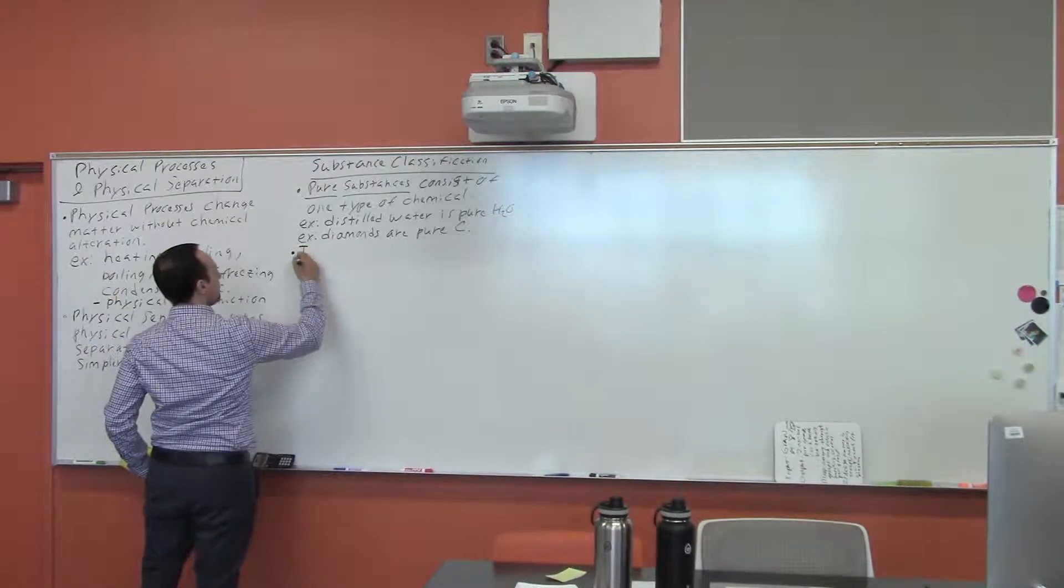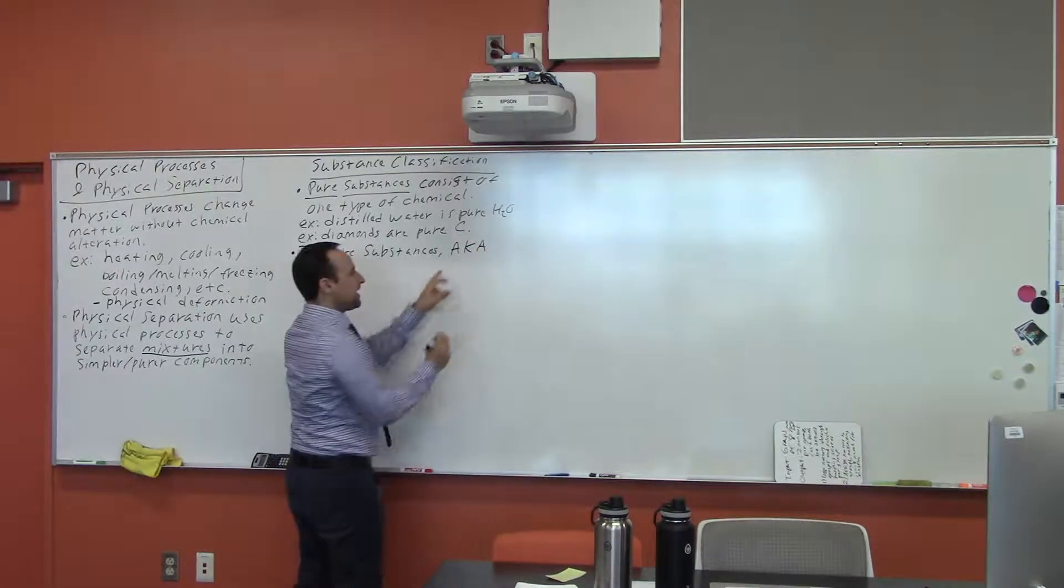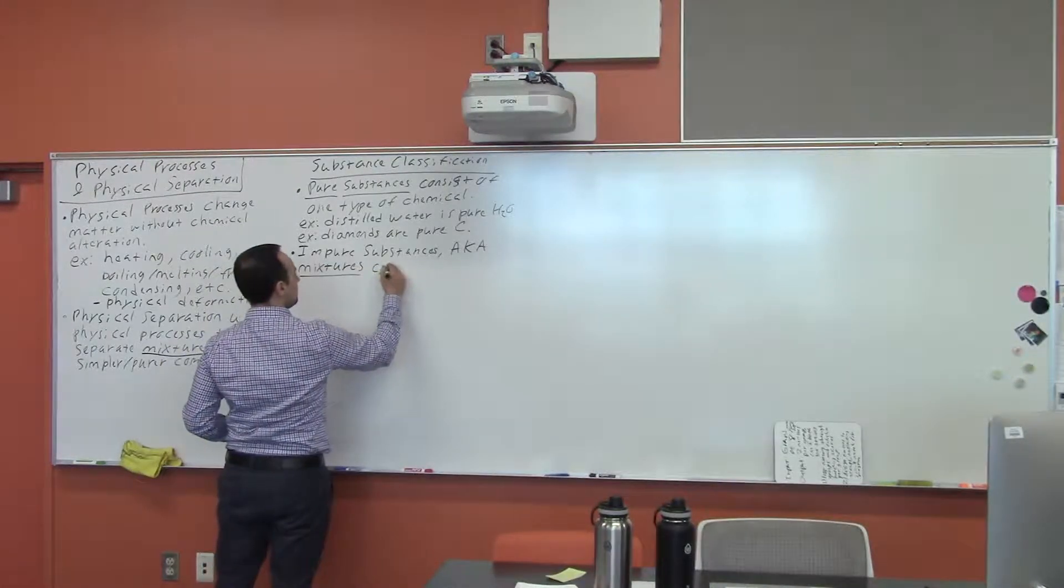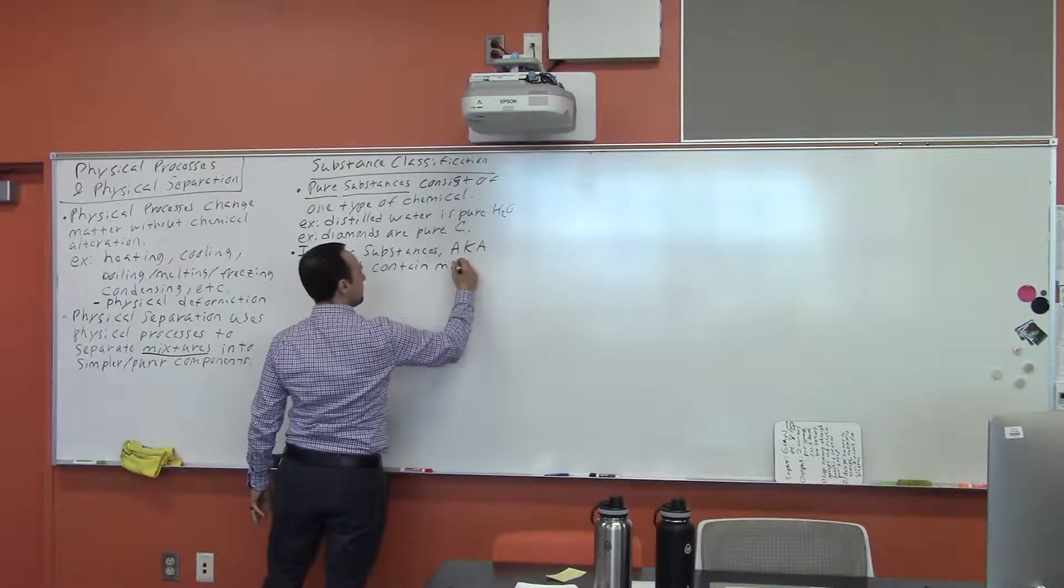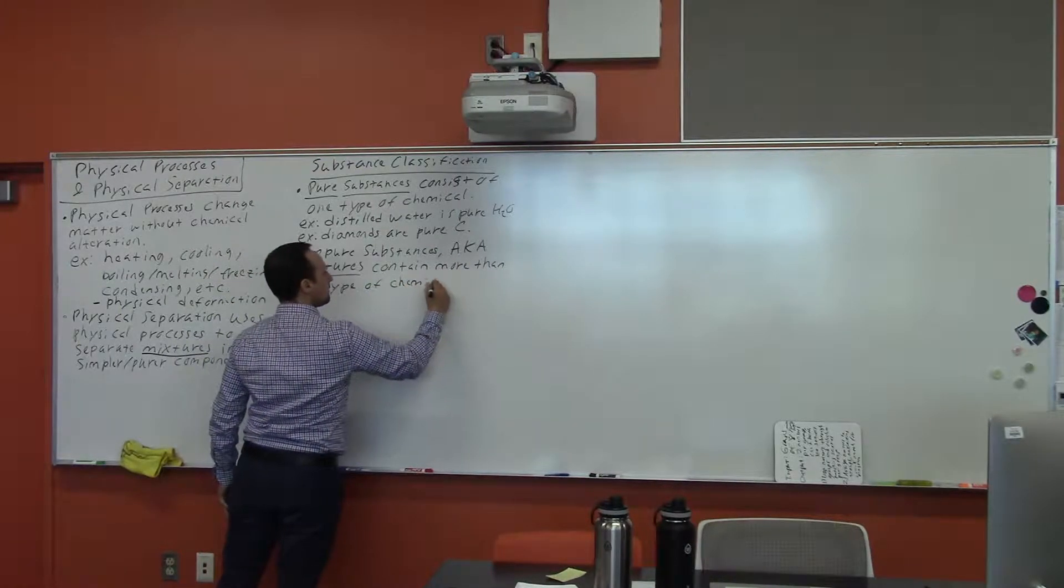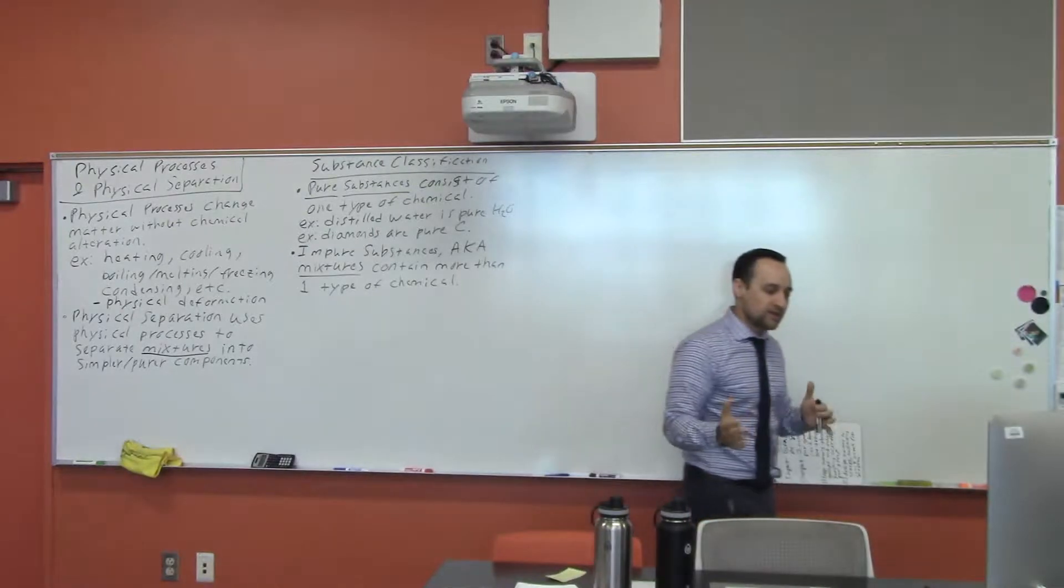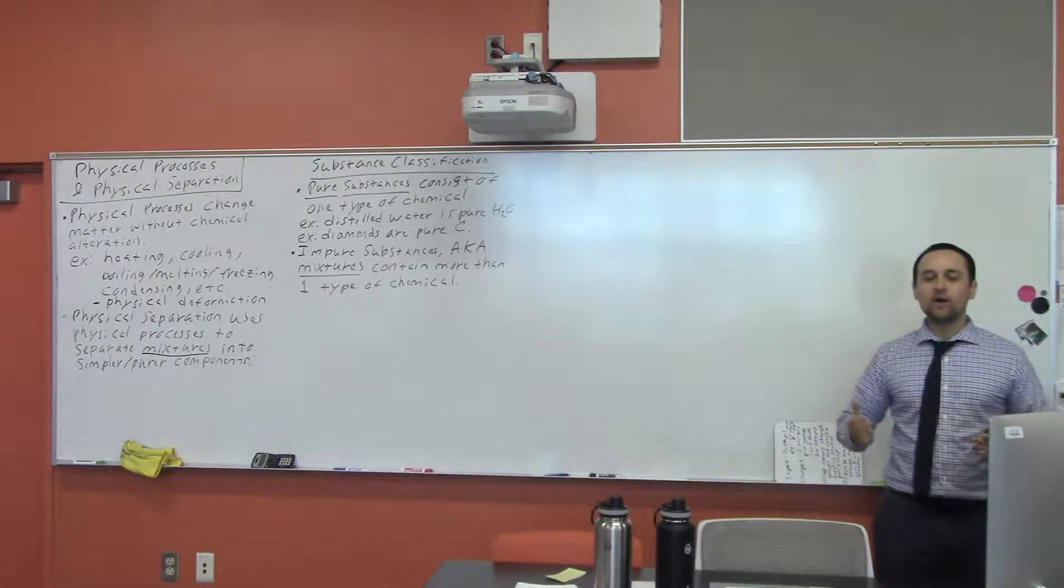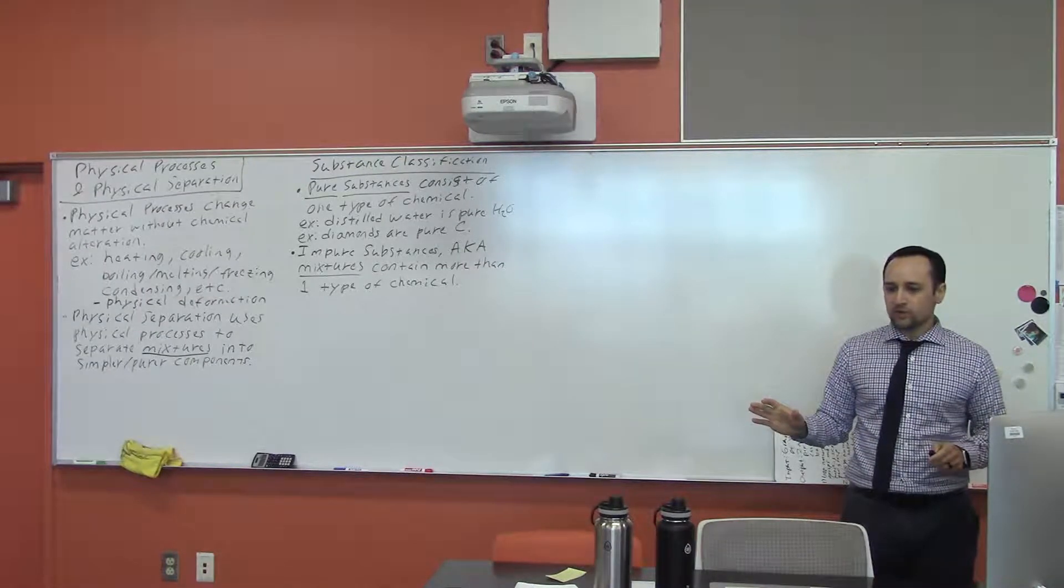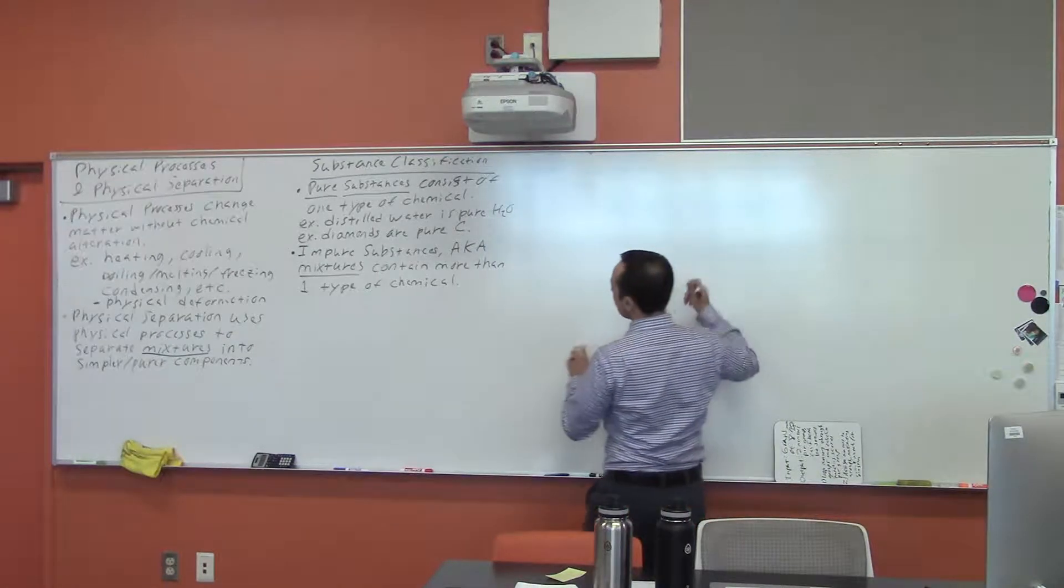So impure substances, a.k.a. What does a.k.a. stand for? Also known as. Also known as mixtures. Contain more than one type of chemical. And mixtures are so important that we define them in two different ways. Chemists run up against two different kinds of mixtures commonly and have to know how to classify them or how to label them. So there are mixture classes that we're going to concern ourselves with and the broadest class or the broadest division is between heterogeneous mixtures and homogeneous mixtures. So we'll define those right now. So mixture classification.